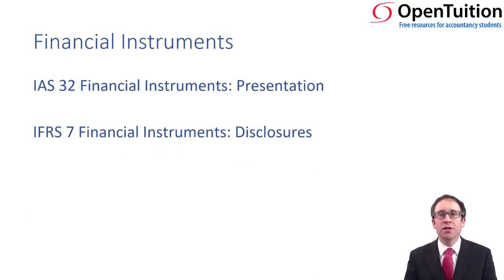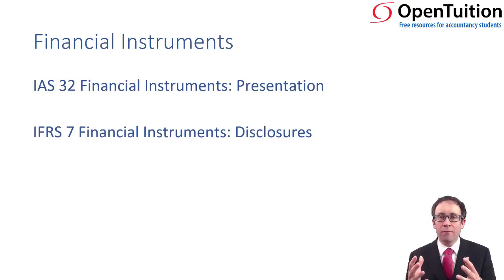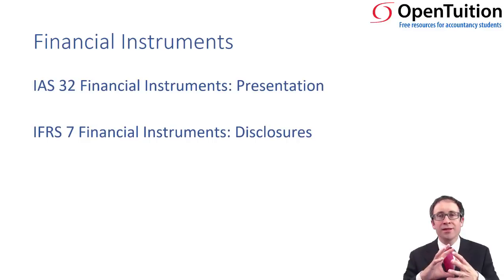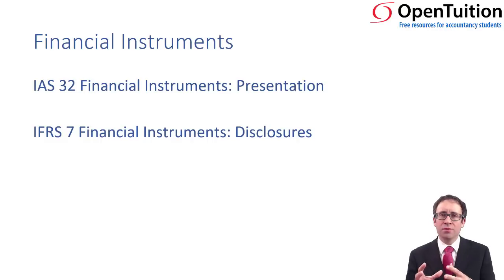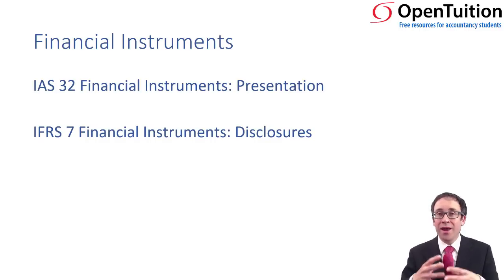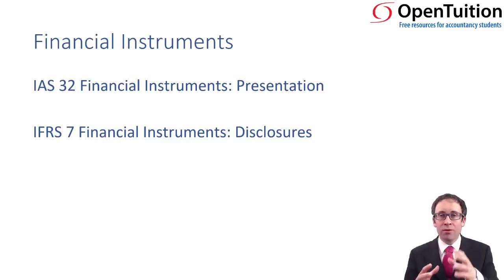IFRS 7 is all about the disclosures. We've got the numbers on the face of the financial statements — in the statement of financial position, in the statement of profit or loss and other comprehensive income. But there's lots of complexity behind the numbers. So we need to make disclosures disaggregating some of the numbers and giving a bit more detail about what those financial instrument figures relate to. We also need some narrative disclosure because attached to these financial instruments — many of them are investments in debt or investments in shares — that can be inherently risky. So we need to look at the risk and disclose it to the users of the accounts. You're not going to see huge amounts of it at this level, but the key thing is to have an awareness that there is a standard on disclosure.